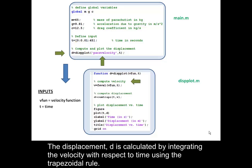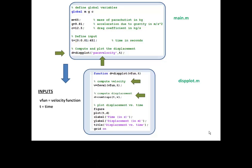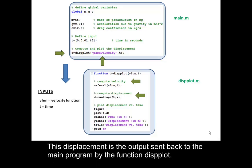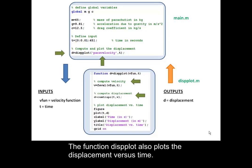The displacement D is calculated by integrating the velocity with respect to time using the trapezoidal rule. This displacement is the output sent back to the main program by the function DISPLOT. The function DISPLOT also plots the displacement versus time.